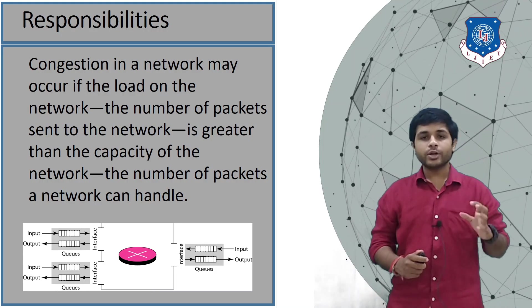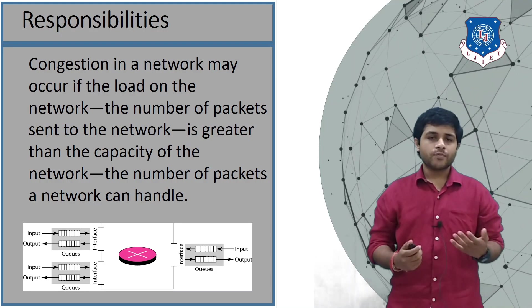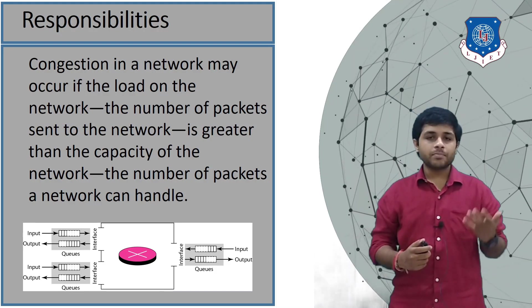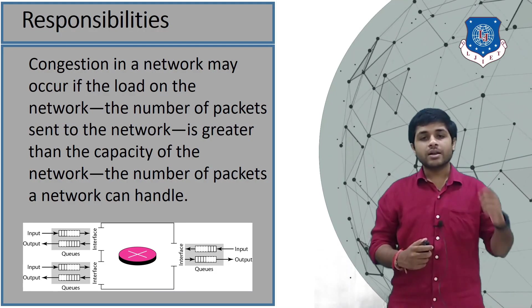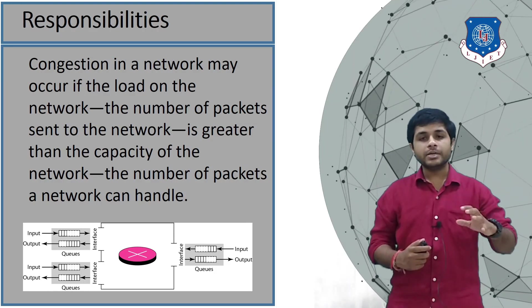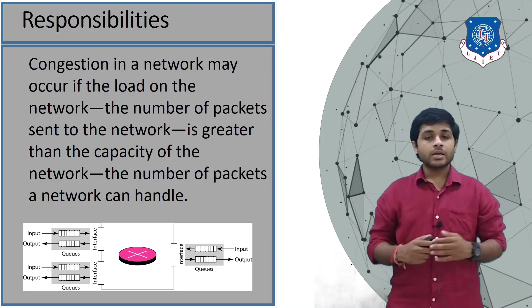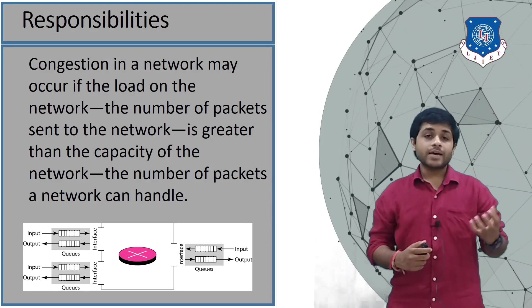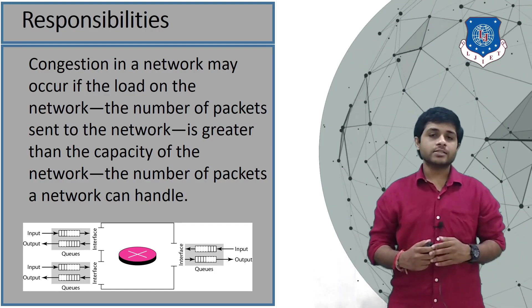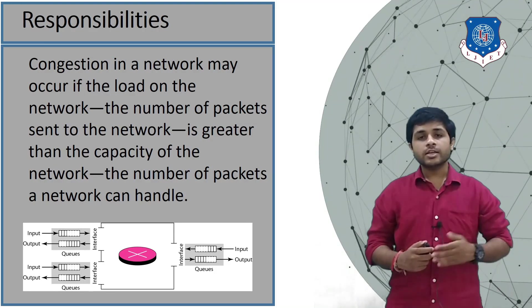The sender should send packets according to the capacity of the link. There are many reasons for congestion: the capacity of the link can be lower, the rate of the sender can be higher, an intermediate device in the network could be working at very slow speed, or an intermediate device may have insufficient memory. These are the causes that create congestion.